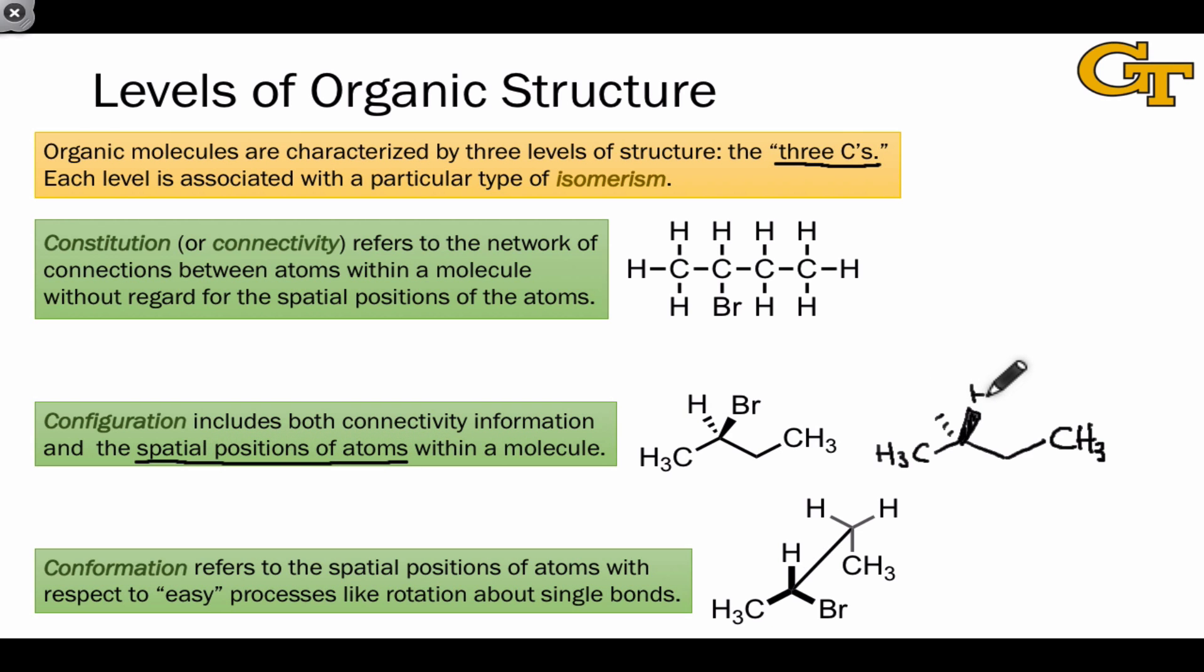Molecules with the same connectivity, but different positions of the atoms in space, in other words, different configurations, are referred to as configurational isomers or stereoisomers. Stereoisomers differ in the positions of their atoms in space, and importantly, they can't be interconverted through an easy process like a single bond rotation.